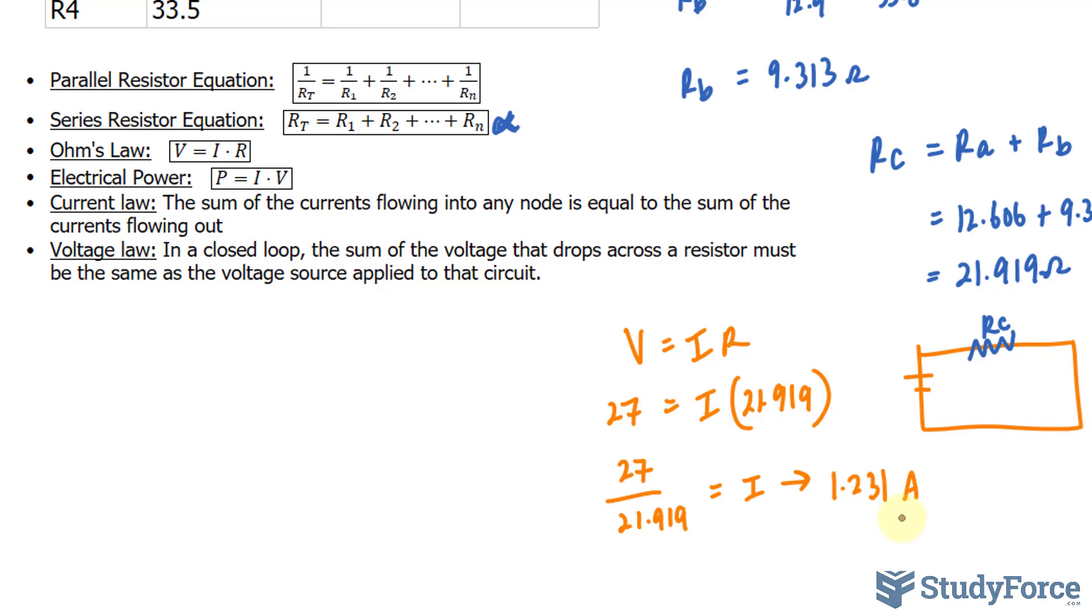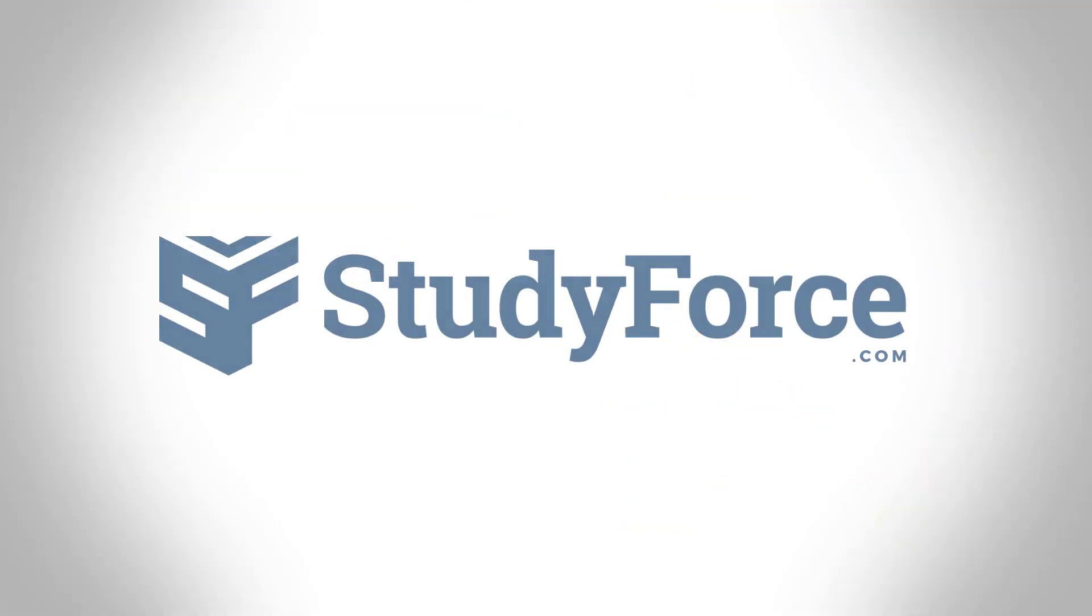Ampere is the unit for current. That concludes part one of this video. If you'd like to see how we individually find out the voltage and current across the resistors, be sure to watch part two where that part is covered.